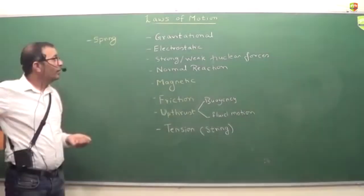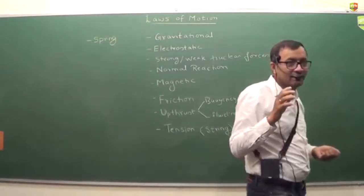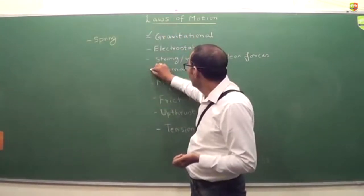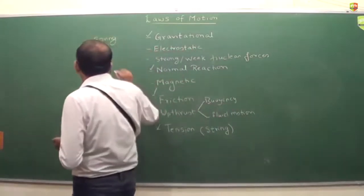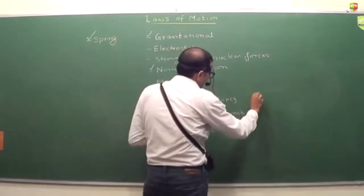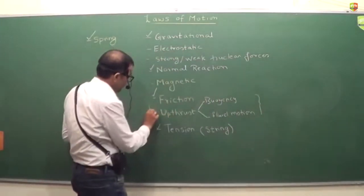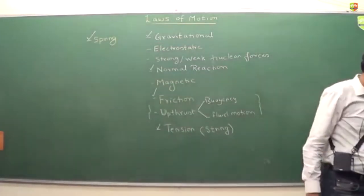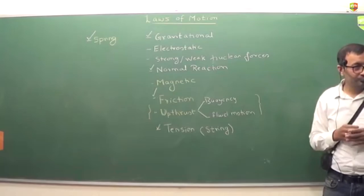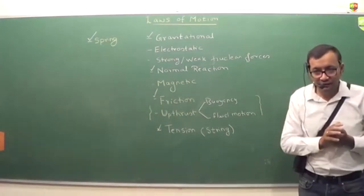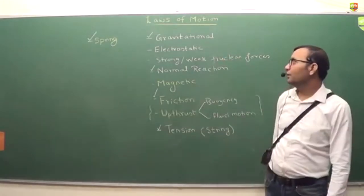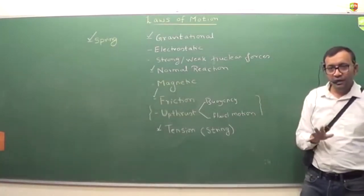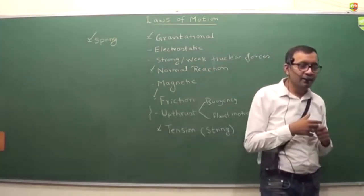In class 11th, our focus is on five forces. There is a separate chapter on buoyancy, so I won't count that here — I'm talking about forces for solid objects. There are only five in class 11th. In class 12th, you also have electrostatic and magnetic force. But in class 11th, only these five forces are there, and we will take them one by one and understand their behavior.